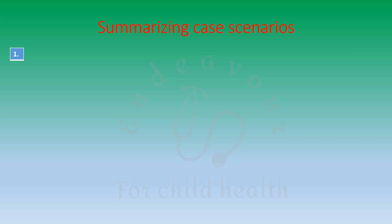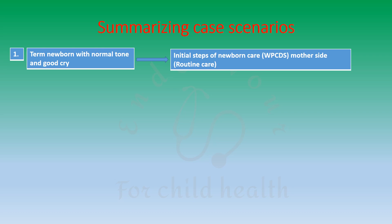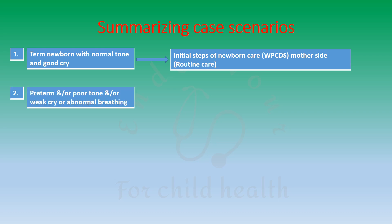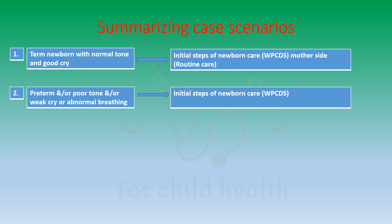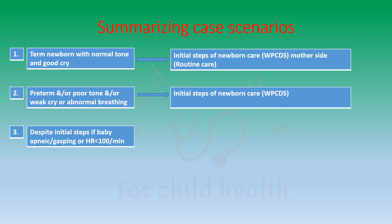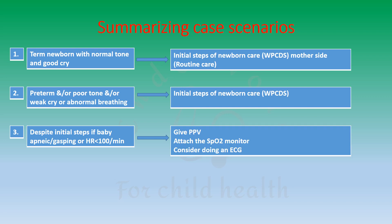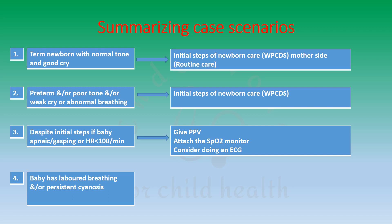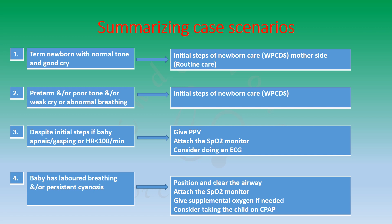Summarizing the various case scenarios: First, if the baby is a term newborn with normal tone and good cry, give initial steps of newborn care (WPCDS) at the mother's side. Second, if the baby is preterm and/or has poor tone and/or weak cry or abnormal breathing, provide initial steps of newborn care but not at the mother's side. Third, if despite initial steps the baby is apneic, gasping, or has a heart rate less than 100 beats per minute, give positive pressure ventilation, attach the SpO2 monitor, and consider ECG. Fourth, if the baby has labored breathing and/or persistent cyanosis, position and clear the airway, attach the SpO2 monitor, give supplemental oxygen, and consider CPAP.